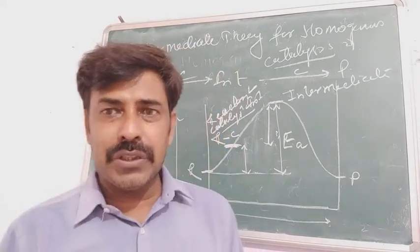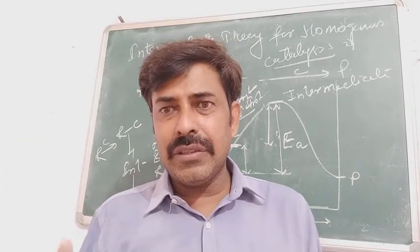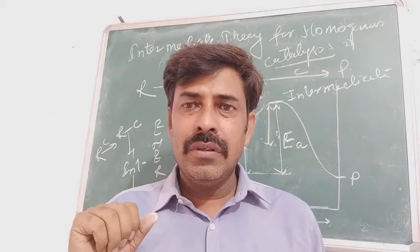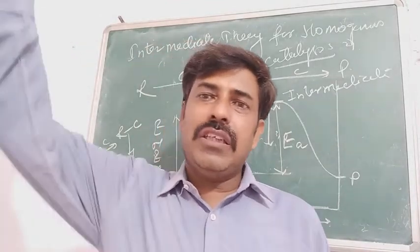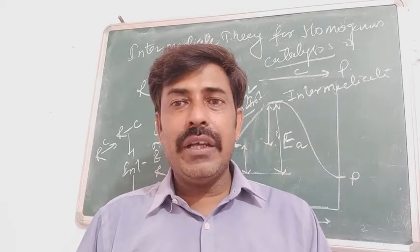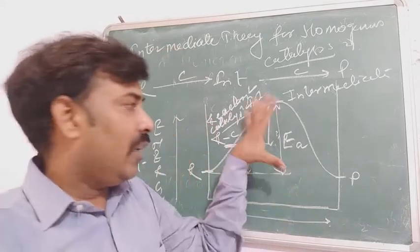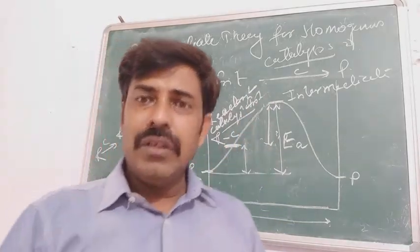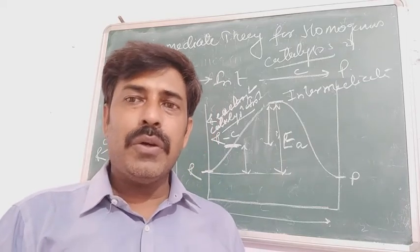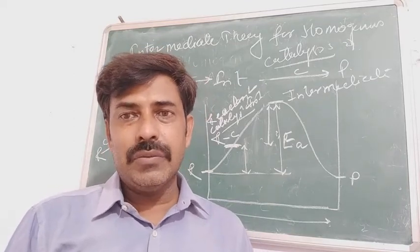We can take another example: if you are going to the first, second, or third floor, how do you go? With the help of ladders. The process becomes easier and faster. But there is a problem with the intermediate theory — we are not capable of explaining the action of the catalytic promoter or the catalytic poison.